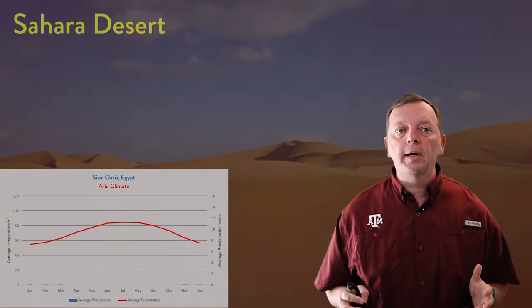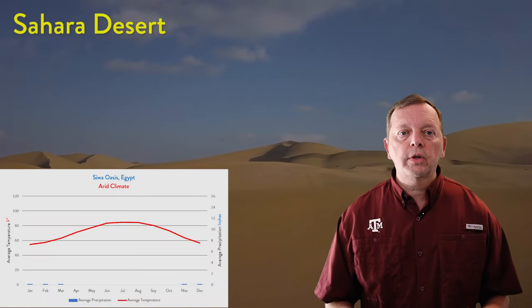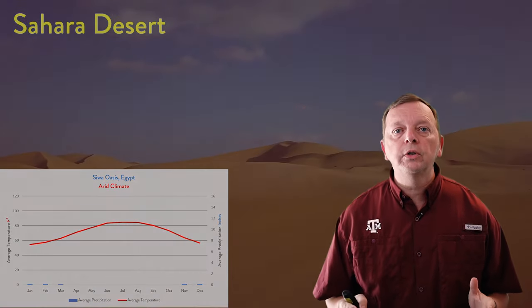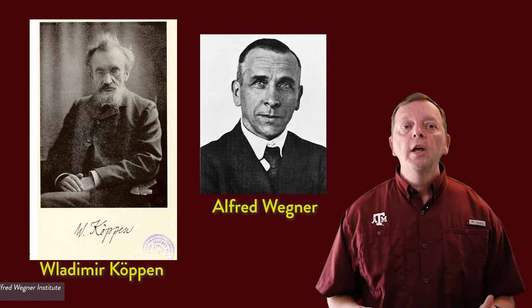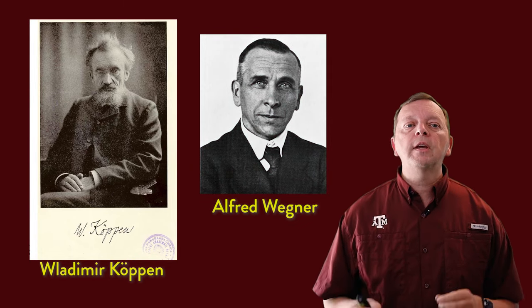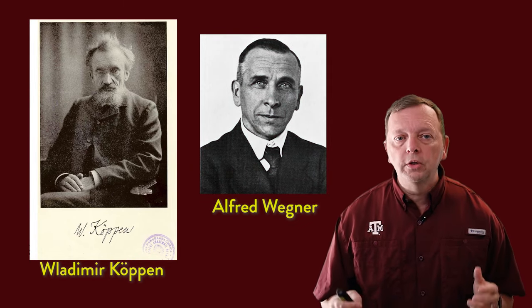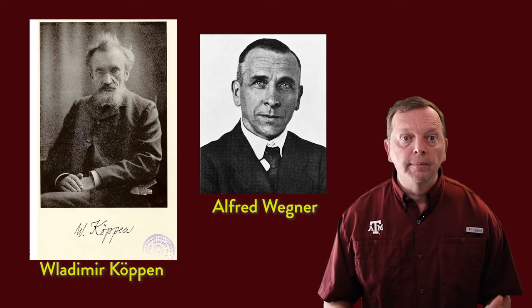From looking at the Climograph of each region, we can determine the type of climate that is found there. Today, we're going to use this classification system that was created by Vladimir Koppen. And here's an interesting fact — Alfred Wegener, who brought us the idea of continental drift, was Koppen's son-in-law.